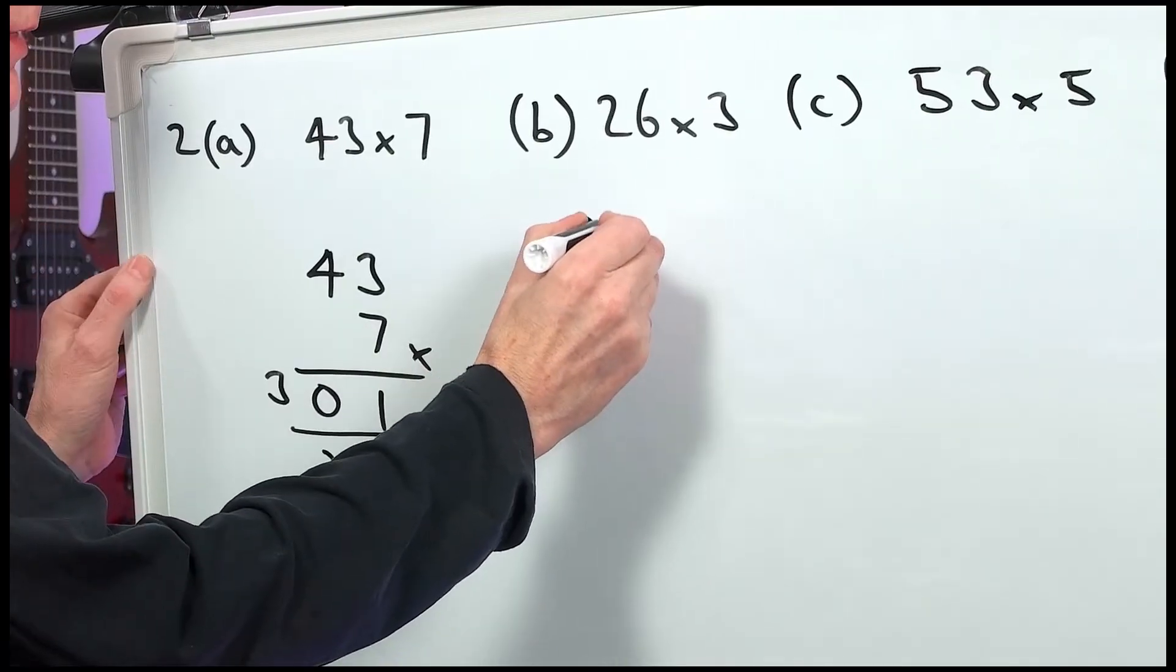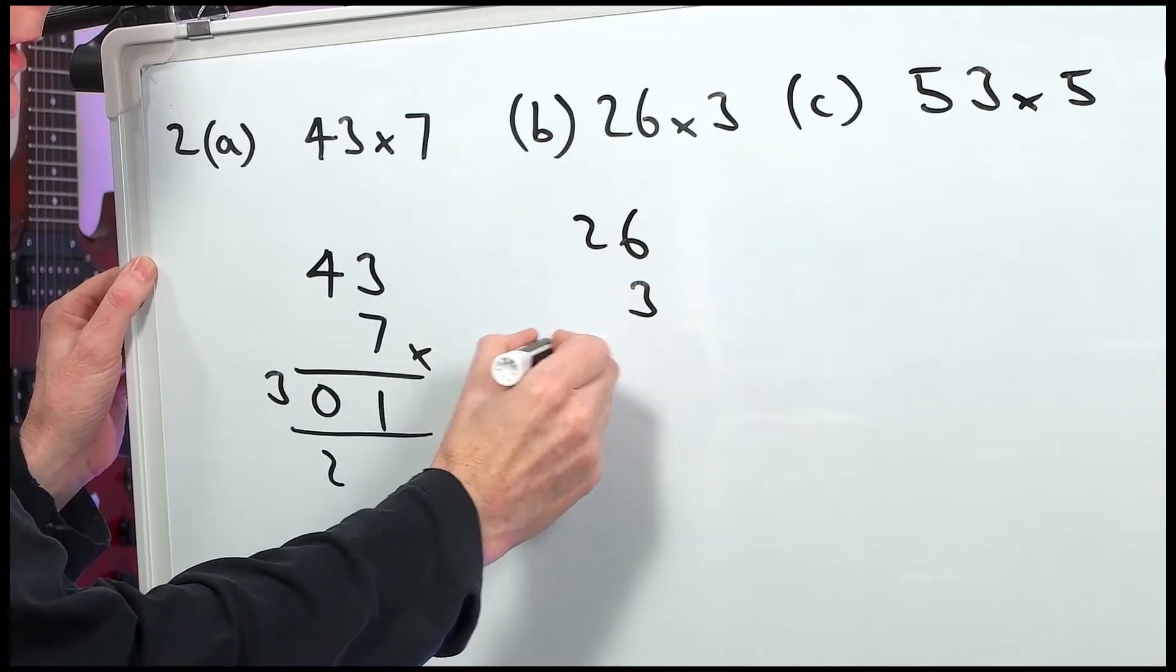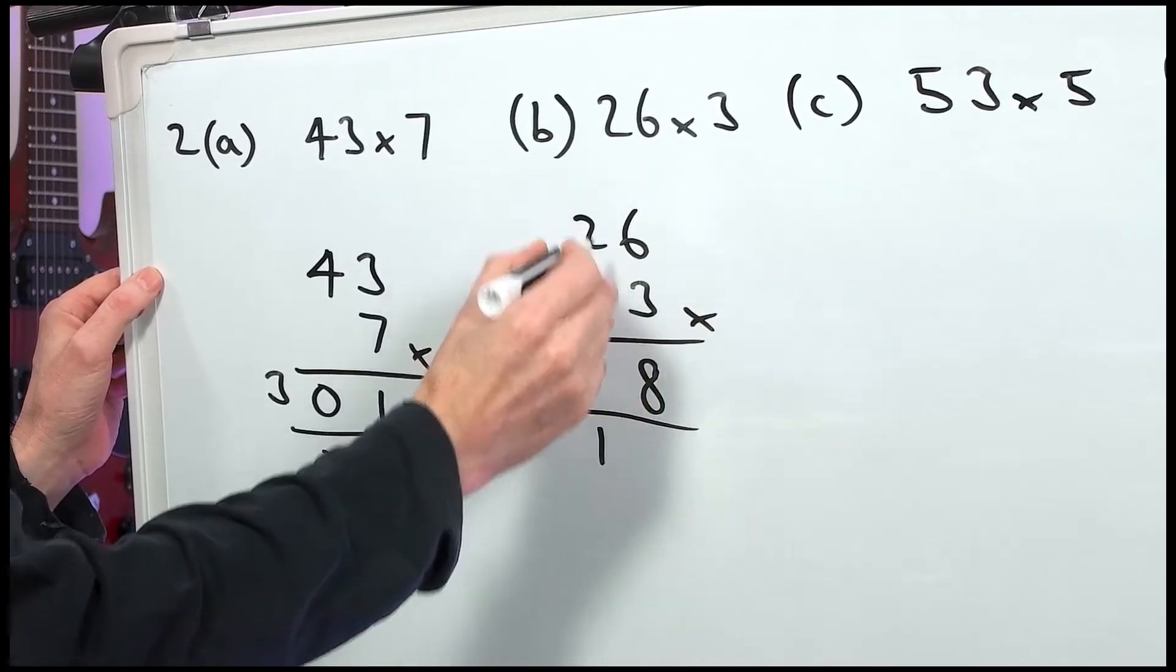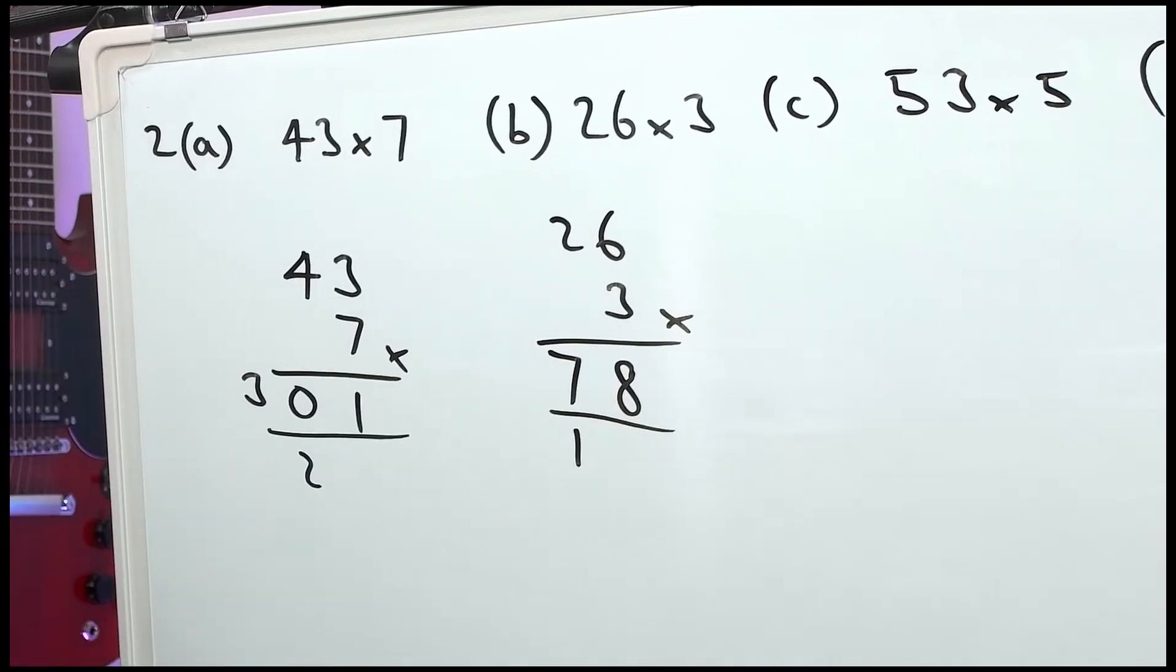Part B, 26 times 3. 3 sixes are 18. 3 twos are 6, and 1 makes 7. 78.